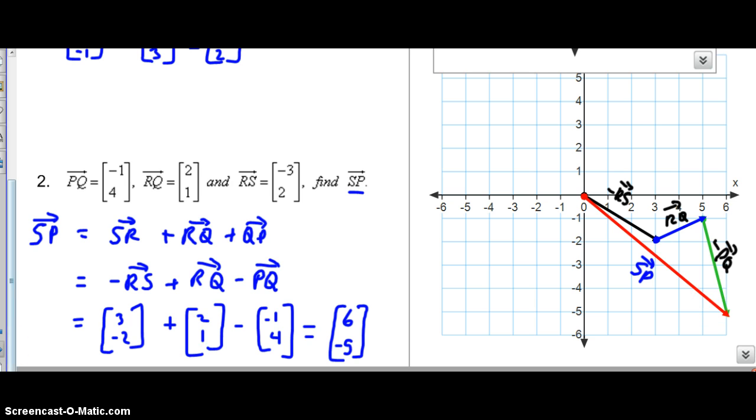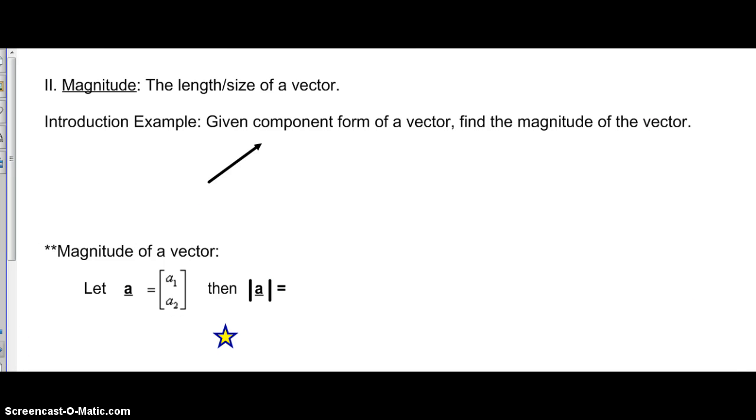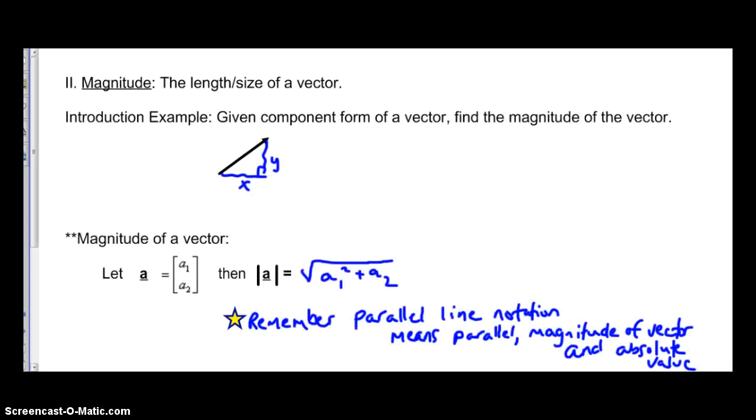Let's look at a couple more things. The first one is magnitude. Remember we find magnitude using the Pythagorean theorem. Our magnitude, we're looking for the length or the size of a vector. We're always looking at a right angle, so we'll be using the Pythagorean theorem to find this length. Remember that these parallel line notation means parallel, magnitude of vector, and absolute value.